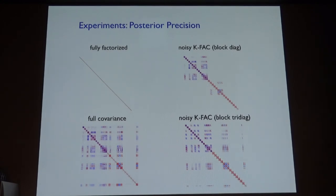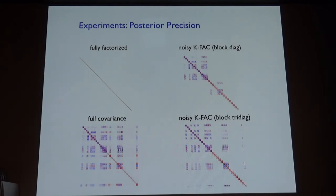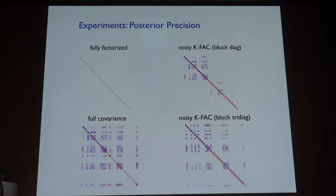How well does this work? One way to look at quality of posterior inference is to visualize the posterior uncertainty. Here we have the posterior precision matrix for a fully factorized BNN — just a diagonal matrix with no correlations between weights. On the bottom left is the best we can do: a full covariance Gaussian posterior on a very small toy problem. The noisy KFAC result actually very closely resembles the full covariance matrix — capturing a lot of the high-level structure. It's a much richer approximation to the posterior than fully factorized models.